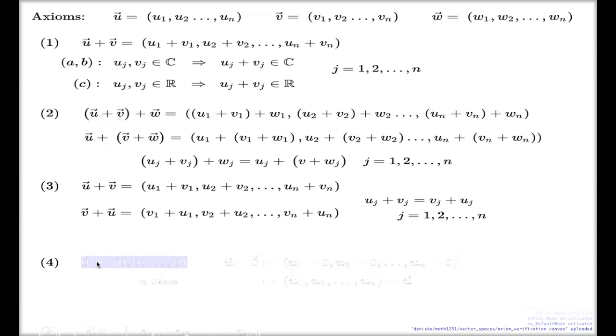Fourth axiom, existence of zero. This is easy. We just suggest a zero vector, like so, and that will do the job. So here we repeat zero n times.